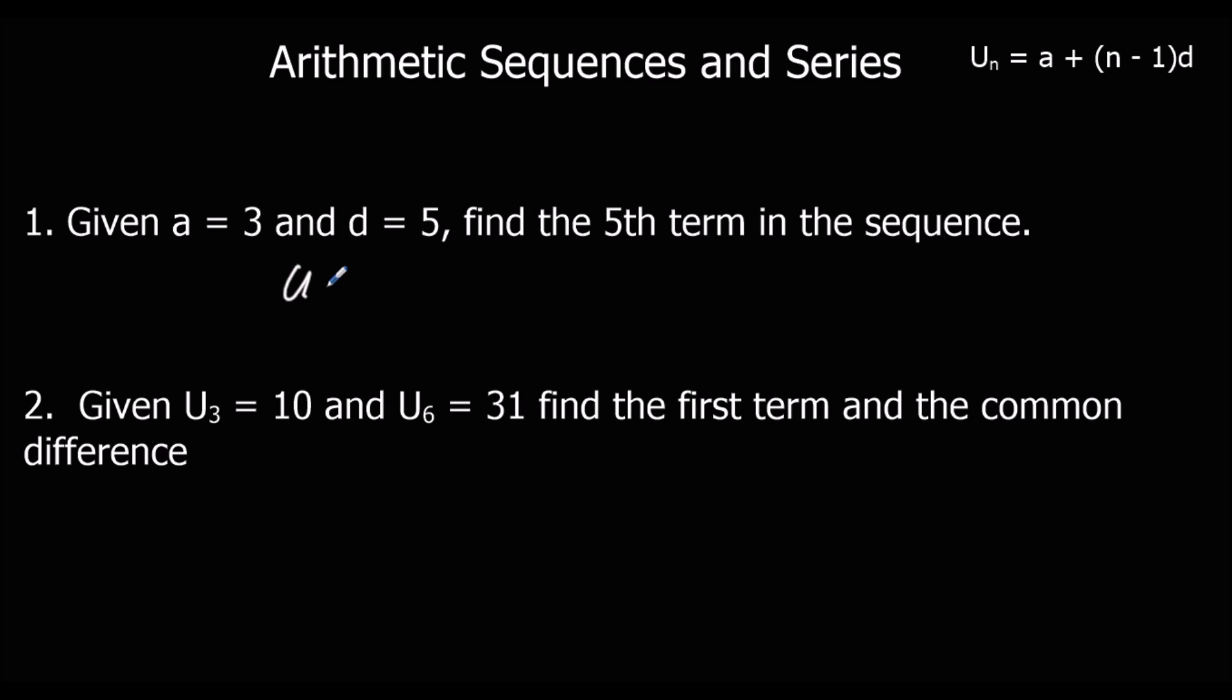u5, the fifth term, is a, 3, plus n minus 1. We want the fifth term, so n is 5. 5 minus 1, lots of d, which is 5. So it's 3 plus 4, 5's. 4, 5's are 20, plus 3, 23.